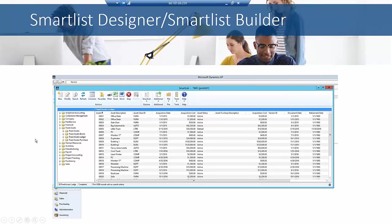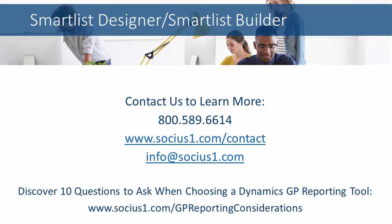Here's another example of a report that's been done — just really fixed assets. You can see acquisition cost, document date, retirement date, and so on. So these are just some examples of what SmartList Builder can produce.